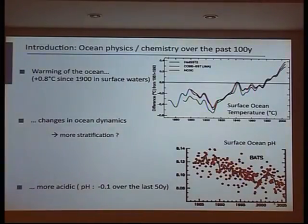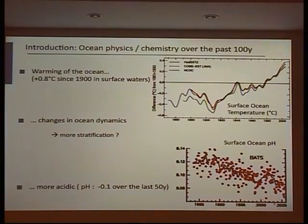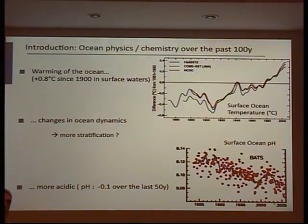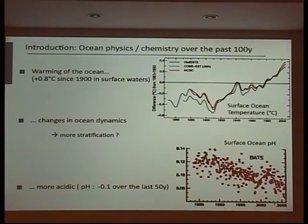The other big change in the ocean, also due to increasing CO2, is ocean acidification. We have here a record of surface ocean pH at one specific location — the BATS station in the Sargasso Sea — with direct measurements from the beginning of the 1980s to today. You can clearly see this decreasing pH of ocean surface waters. Over the last 50 years, the ocean has lost nearly 0.1 pH units, due to the ocean absorbing anthropogenic CO2. So those are two big changes: warming and acidification.